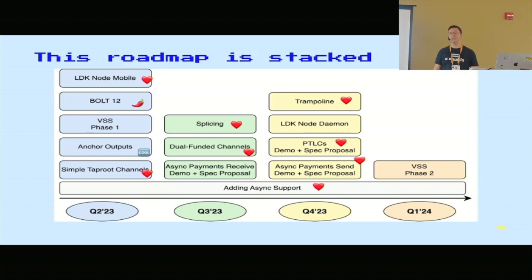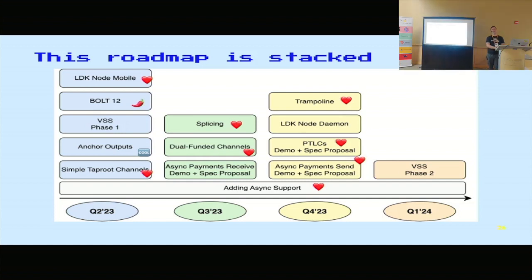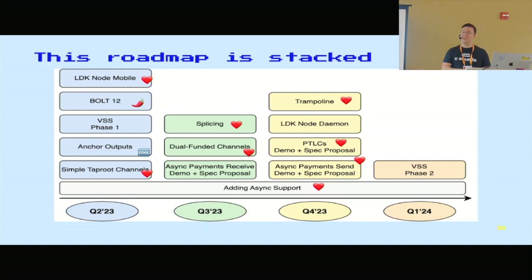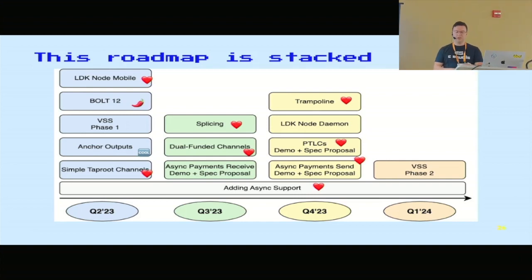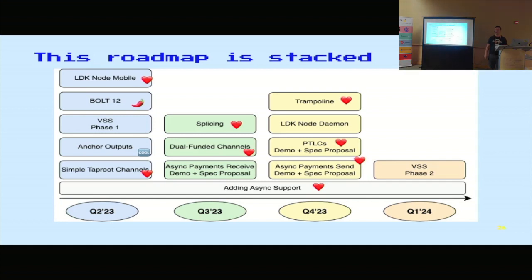Follow-up: would that mean LSPs on both sides need to be async-compatible, or only the receiver's LSP? It depends on which way you're going. If you're an always-online node sending to someone who's sometimes offline, you don't have to have an LSP. And the other way as well — if you're not always online and want to send, you can have an LSP on your end, but the person on the other end could just speak the onion message language.